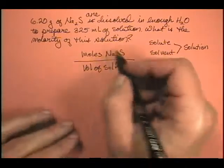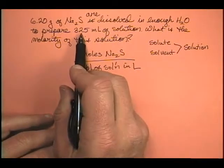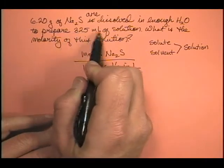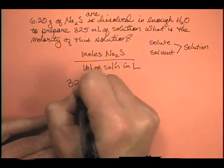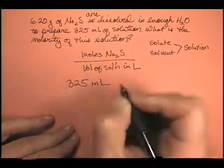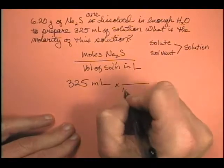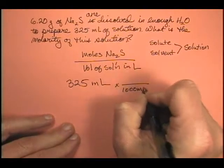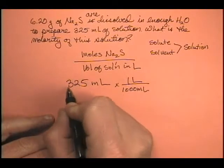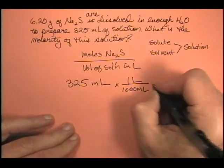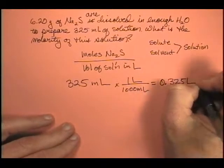So, which of these two things do we already know? Well, we know the volume of the solution. It says to prepare 325 milliliters of solution. Remember, 325 milliliters - we're going to divide that, because 1,000 milliliters is 1 liter. So we're going to move the decimal place three places to the left. So we have 0.325 liters.